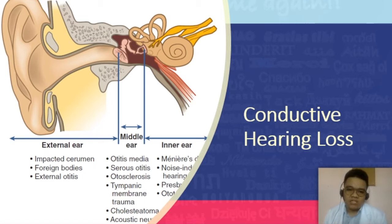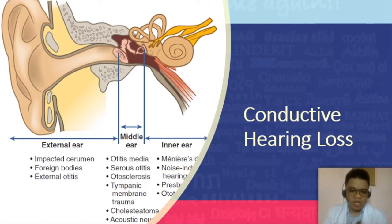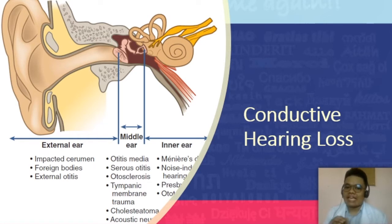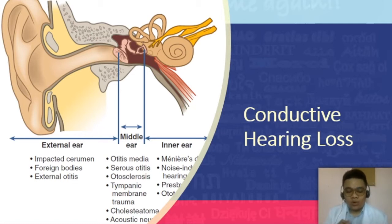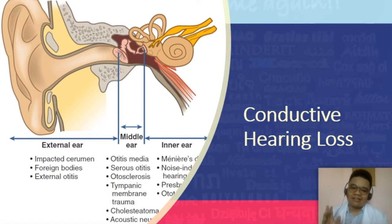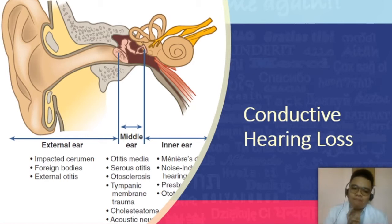The first cause is your impacted cerumen. The problem is the accumulation of your earwax, because this accumulation would lead to drying up and later on would become impacted. This impaction can occlude the external auditory canal, which would later cause conductive hearing loss. In other words, sound could not travel properly from your pinna or auricle going towards your tympanic membrane because of the presence of this occlusion.